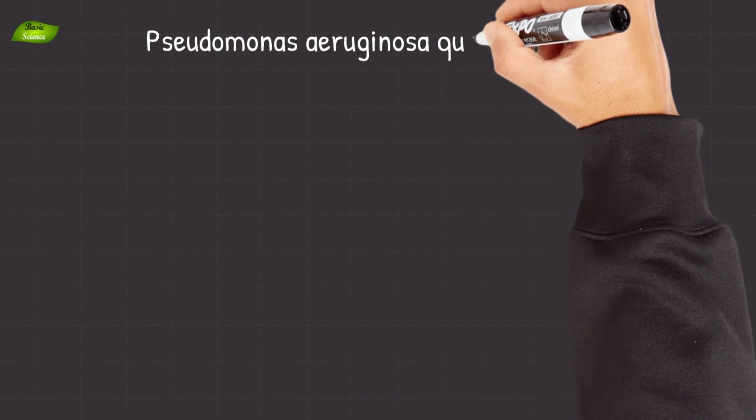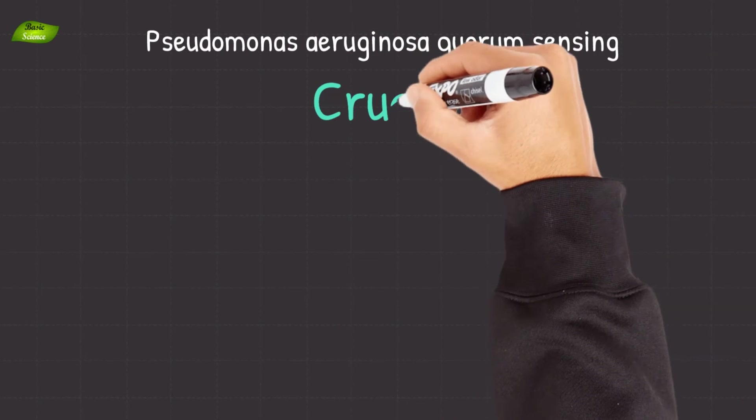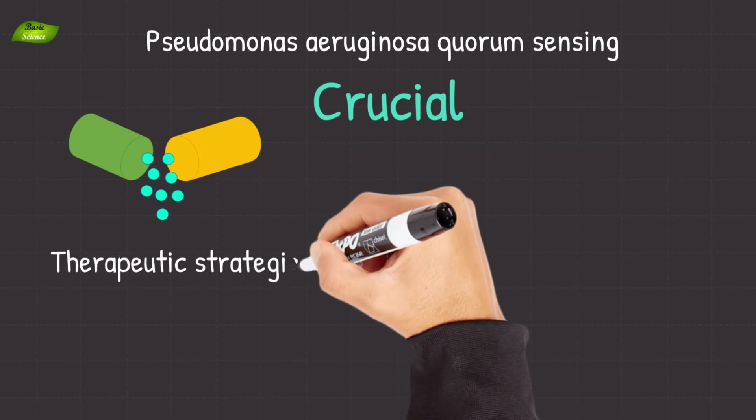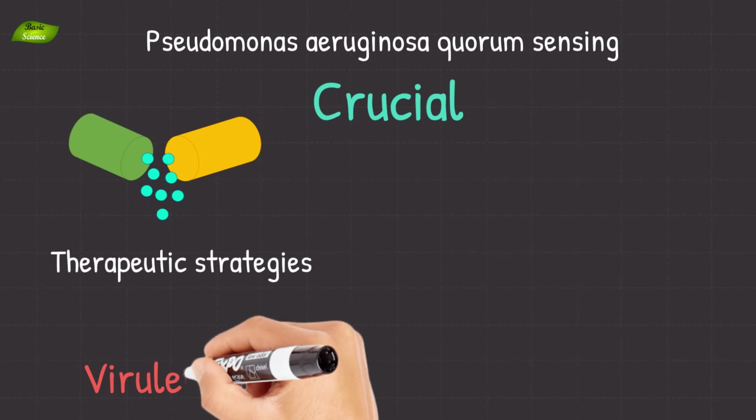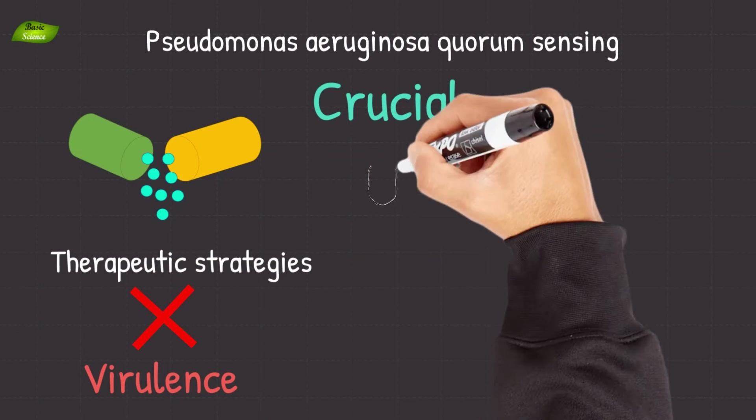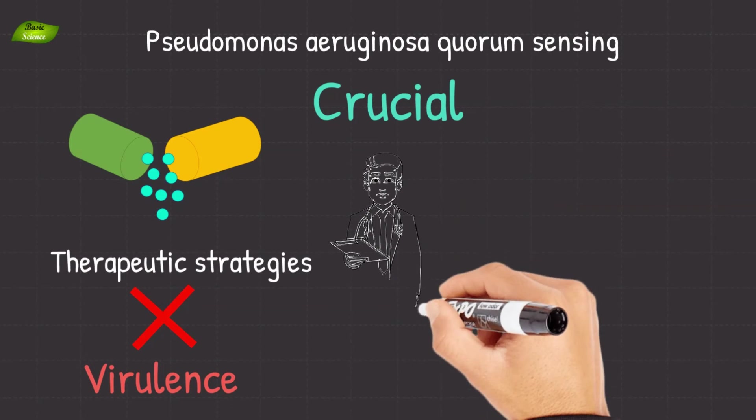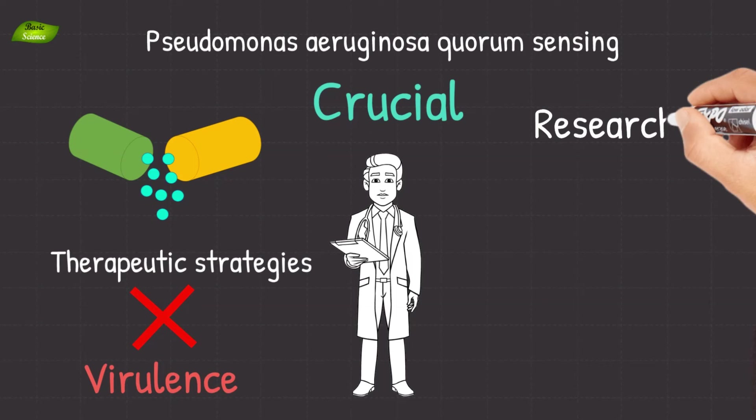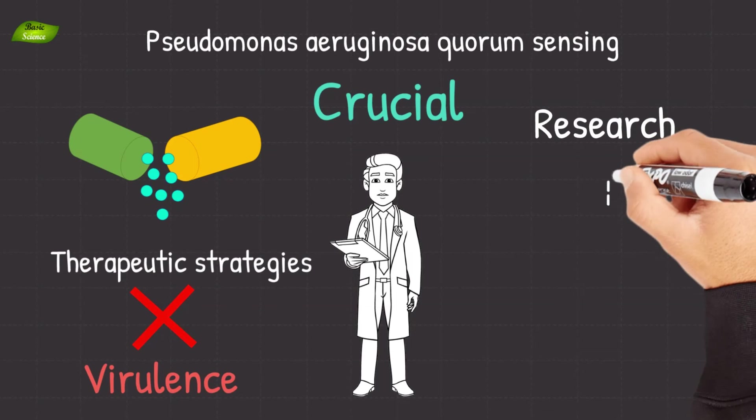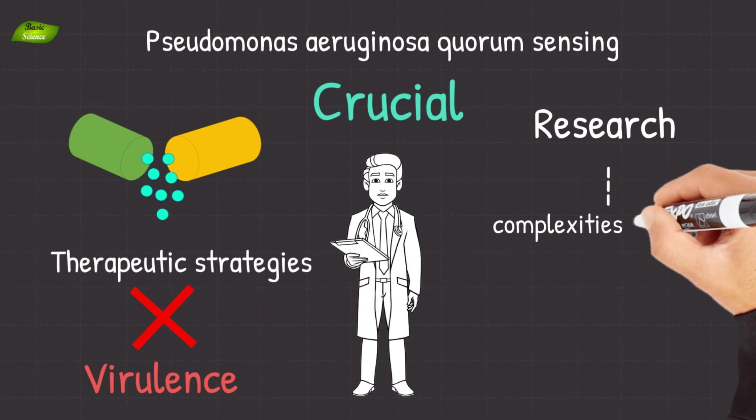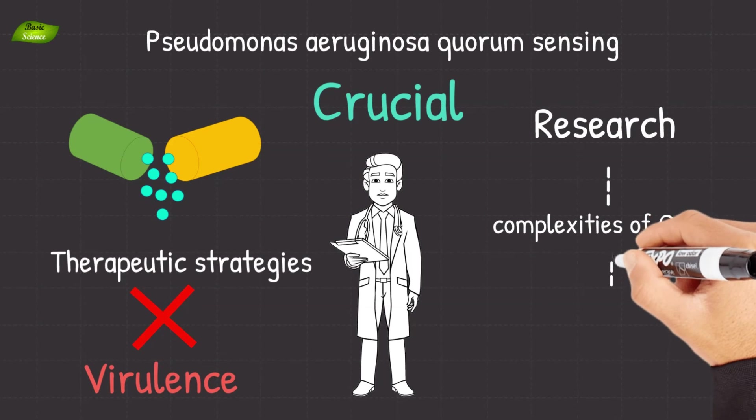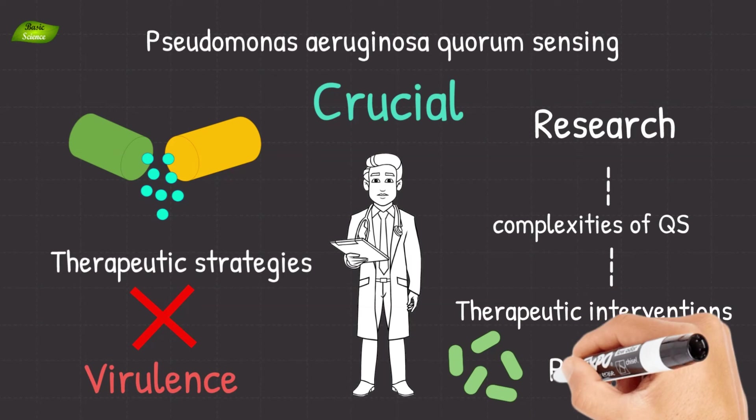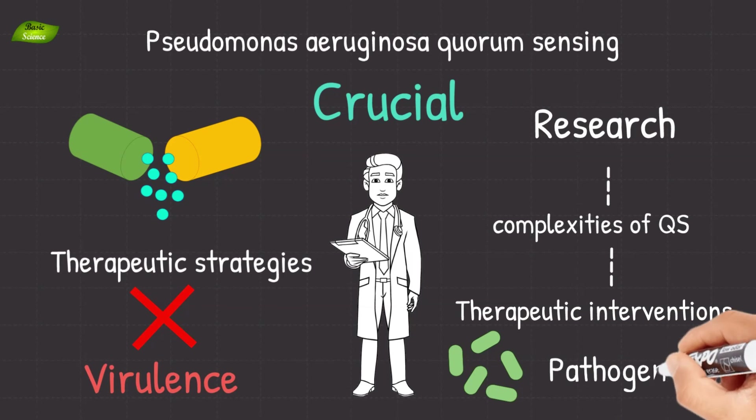Understanding the details of Pseudomonas aeruginosa quorum sensing is crucial for developing targeted therapeutic strategies. Disrupting quorum sensing could potentially attenuate the virulence of this pathogen, offering novel avenues for treatment. Research in this field continues to unravel the complexities of quorum sensing, shedding light on potential therapeutic interventions and contributing to our broader understanding of bacterial communication and pathogenesis.